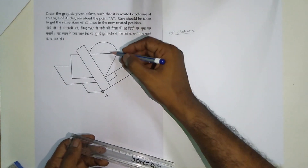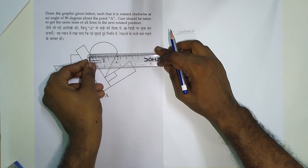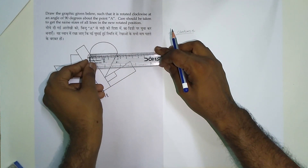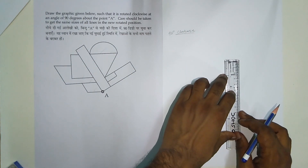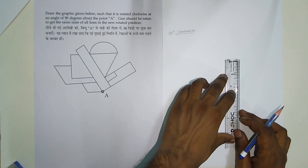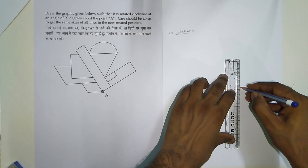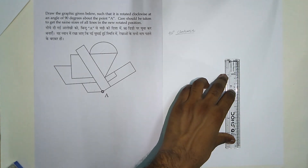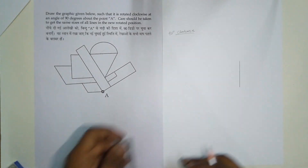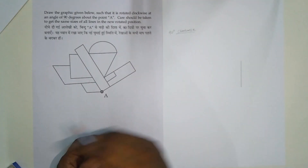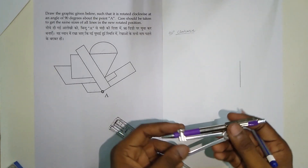First of all, draw this line. Take this measurement: 4.5. Now draw the circle, so further we need to have the radius.